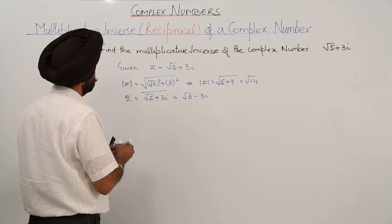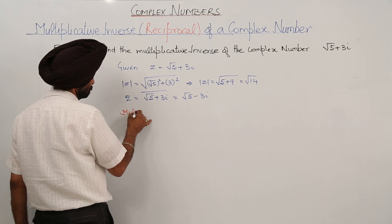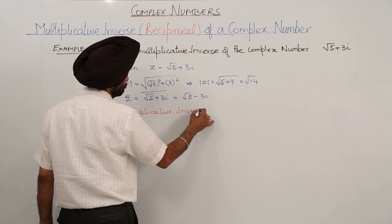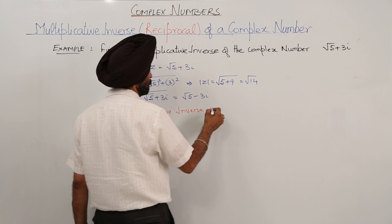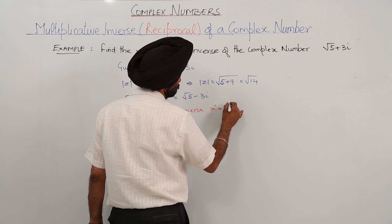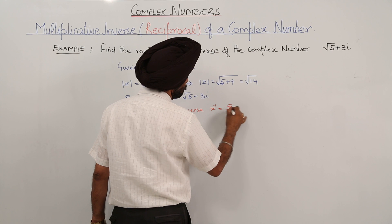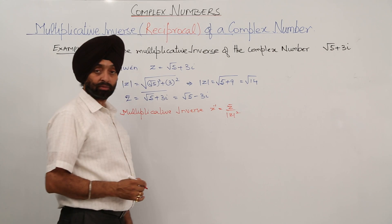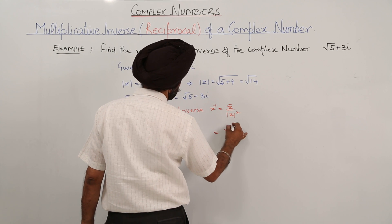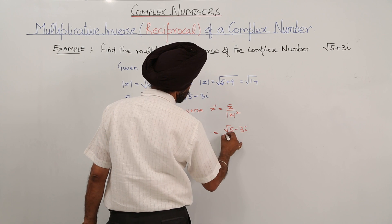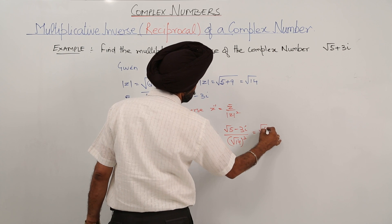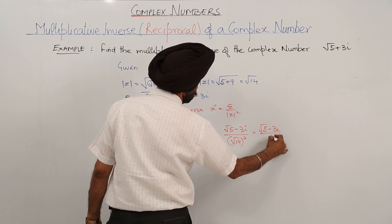The multiplicative inverse is equal to the conjugate of Z upon modulus of Z whole square. So this becomes √5 minus 3i upon (√14)², which is √5 minus 3i upon 14.